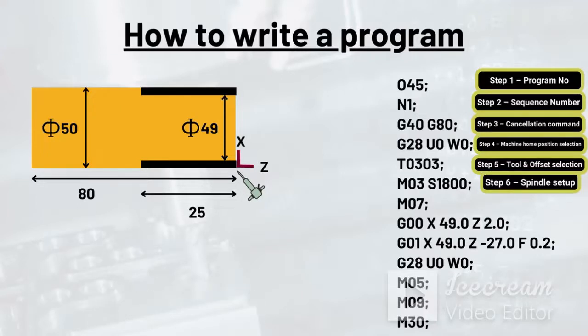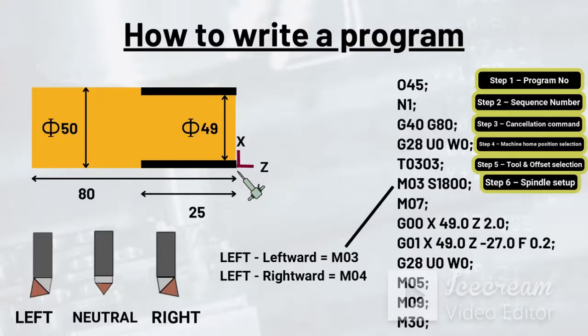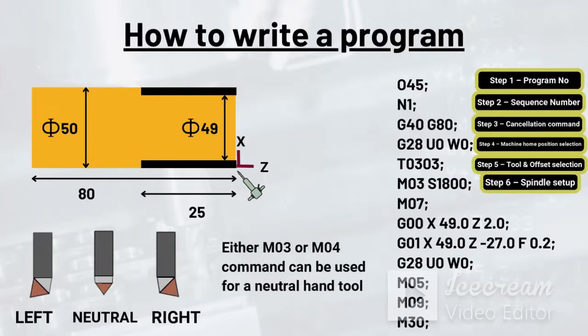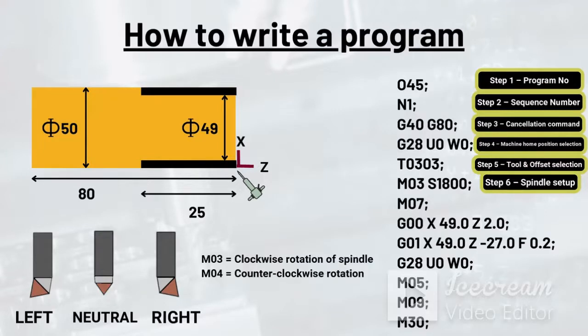The next step, or the sixth step, is setting up the spindle. If the hand of tool is left and propagation of tool towards workpiece is also leftward, then M03 command will prevail, whereas if the propagation of left hand tool is towards right, M04 command will prevail. Same thing goes for right hand tool as well. However, in case of a neutral hand tool, either M03 or M04 can be used.